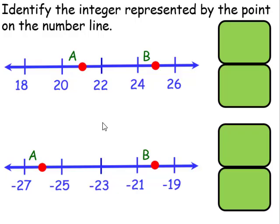Identify the integer represented by the point on the number line. When we take a look at this one, we have 18 here, then this would be 19 in the middle, then 20, and then we would have 21, and then 22, then 23, then 24, then 25, then 26.